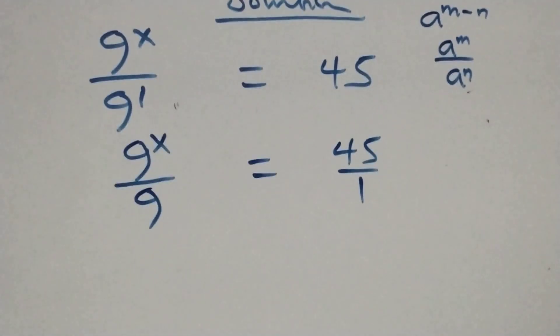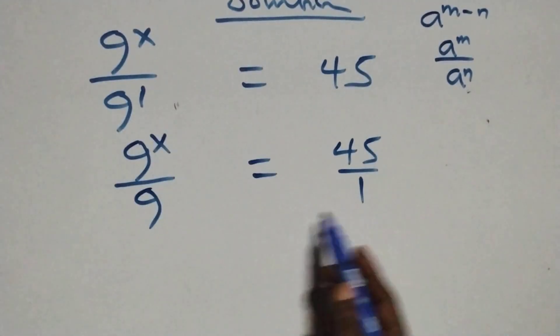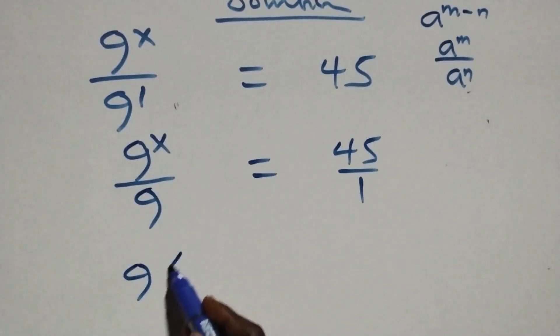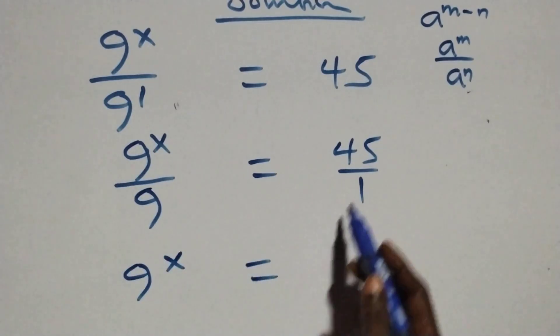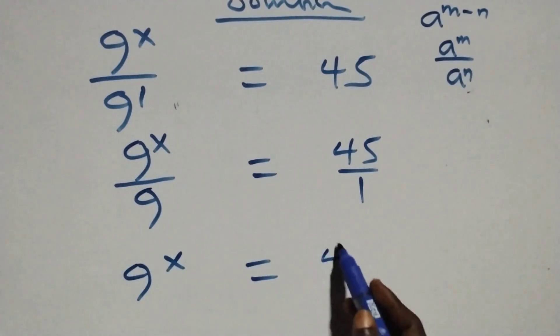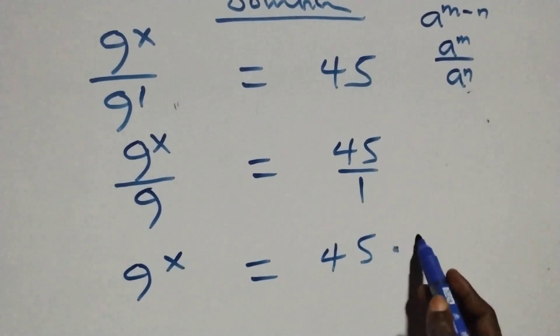Then we cross multiply: 9 raised to power x times 1, which is the same as 9 raised to power x, equals 45 times 9 on this side.